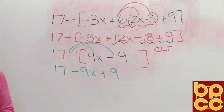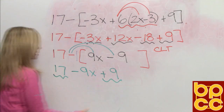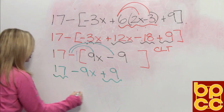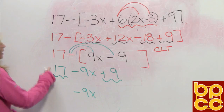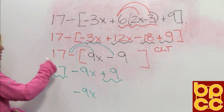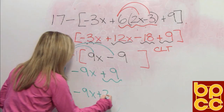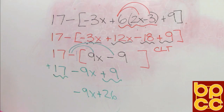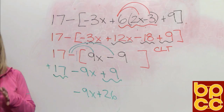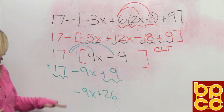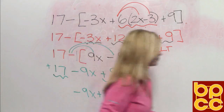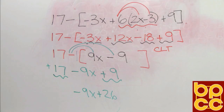We're not done — we still have to collect like terms. We have a variable and constants. So we write negative 9x first. Then 17 is positive and 9 is positive: 17 plus 9 is 26. So that algebra expression, when simplified completely, would be negative 9x plus 26. That concludes Module 2 on addition and subtraction of polynomial expressions. Thank you.